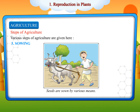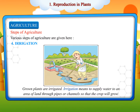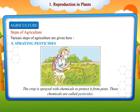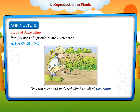Sowing: Seeds are sown by various means. Irrigation: Grown plants are irrigated. Irrigation means to supply water to an area of land through pipes or channels so that the crop will grow. Spraying pesticides: The crop is sprayed with chemicals to protect it from pests. These chemicals are called pesticides. Harvesting: The crop is cut and gathered, which is called harvesting.